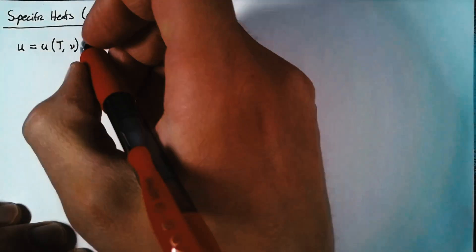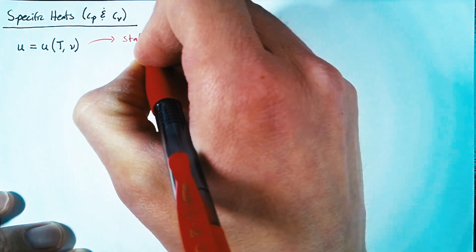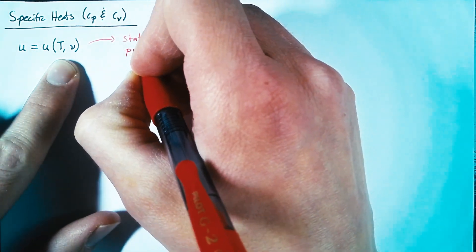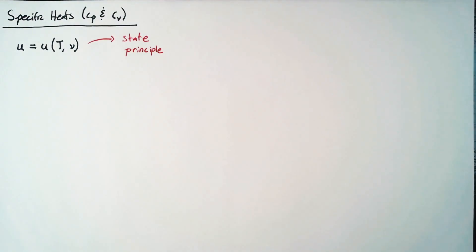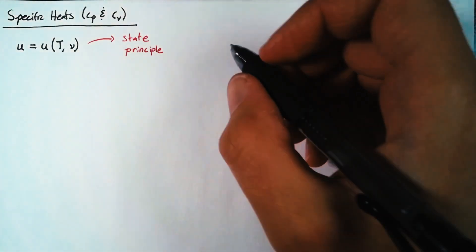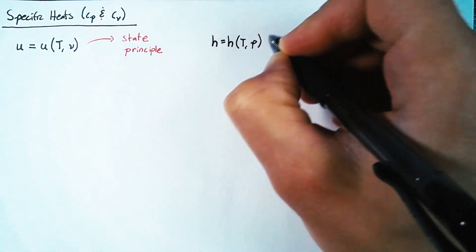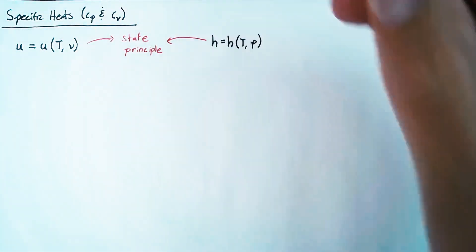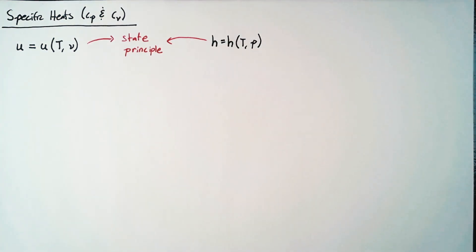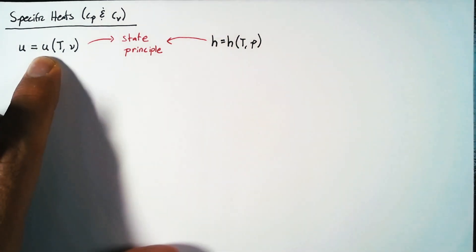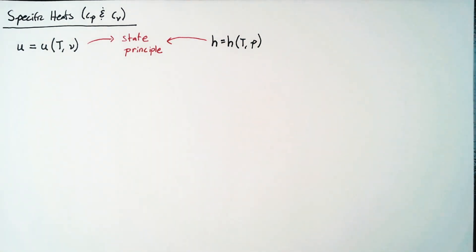The reason for this is something called the state principle, which says that states can be fully defined by any two independent variables. Likewise, we can also say that our enthalpy is a function of temperature and pressure, for the exact same reason. Now these aren't the only two choices we could possibly make — we could say internal energy is a function of temperature and pressure, or of pressure and specific volume — but these choices just happen to lead us to useful results, so that's why we're choosing them.